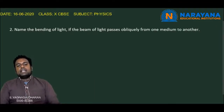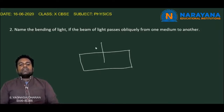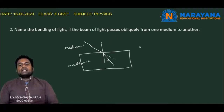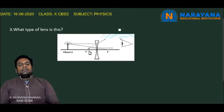The second question: Name the bending of light if a beam of light passes obliquely from one medium to another. When we consider two different media with an interface between them, a ray of light entering obliquely from the first medium into the second medium bends. This phenomenon — the change in direction or bending of light when it passes obliquely from one medium to another — is called refraction of light.